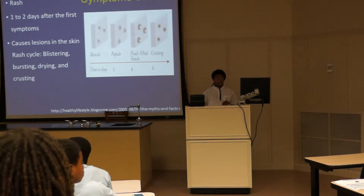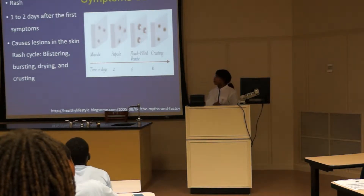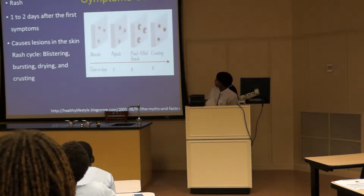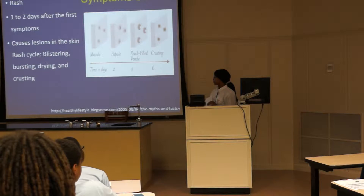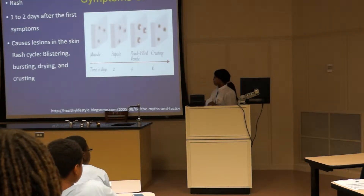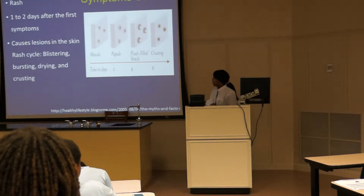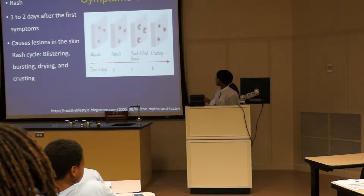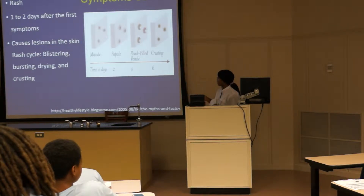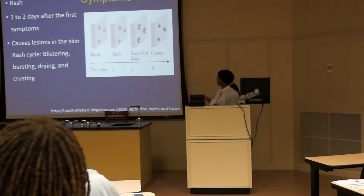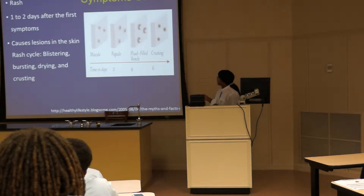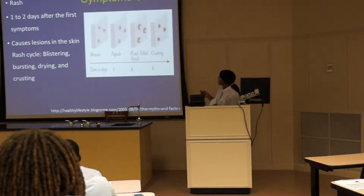Next comes the rash. It is the most well-known characteristic of Varicella, and it happens one to two days after the first symptoms. It causes lesions in the skin, and the rash cycle consists of blistering, bursting, drying, and crusting. Here is an image of one to two days when the first red spots begin to occur. From two to four days, the red spots begin to fill with pus. From four to six days, when the blisters are completely full, they will then pop, and from six days on, they will crust over.